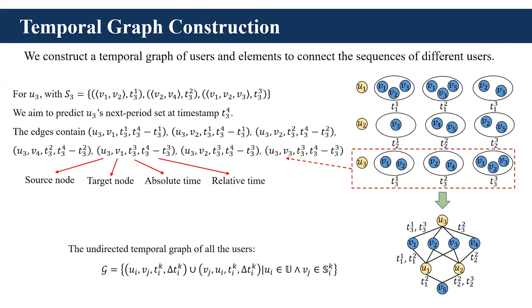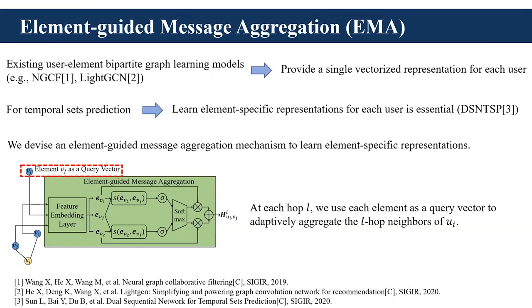You may notice that the temporal graph is bipartite. It's straightforward to apply existing graph neural networks for bipartite graph learning to solve our problem, such as NGCF or LightGCN. However, these methods can only provide a single vectorized representation for each user, and the expressive ability of such a single vector is found to be insufficient for our temporal set prediction problem. To this end, we devise a new element-guided message aggregation mechanism to learn element-specific representations for each user.